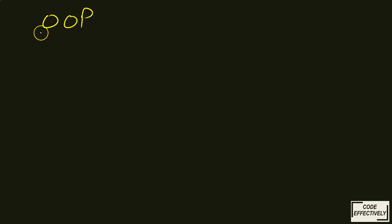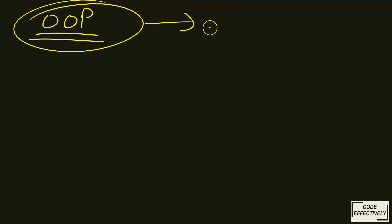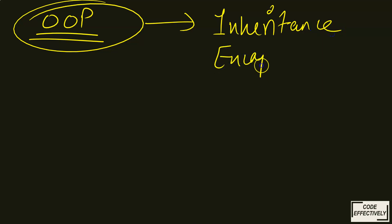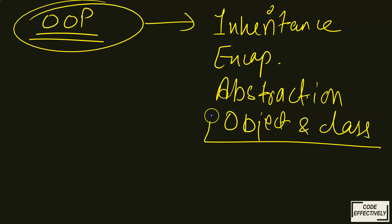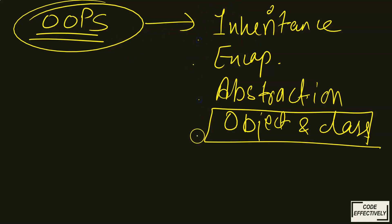We are studying Java because Java is famous for OOP — object-oriented programming. Java follows the concepts of OOP. The main features of OOP are inheritance, encapsulation, abstraction, and object and classes. These are the main features of an object-oriented programming language.